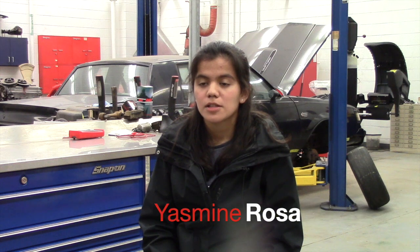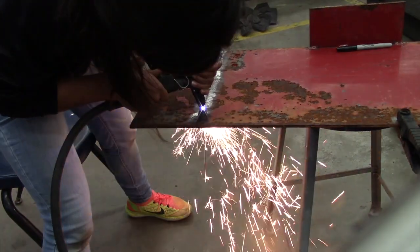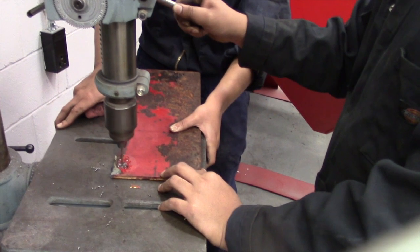After determining the size plate we wanted to use, we cleaned it, cut it, and drilled mounting holes for the center link.